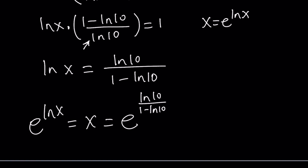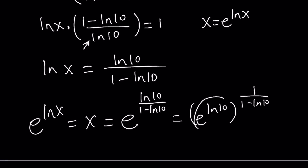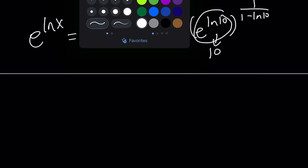There are different ways to write it. For example, this can be written as e to the power ln 10, to the power 1 over 1 minus ln 10. Notice that e to the power ln 10 is equal to 10, so this becomes 10 to the power 1 over 1 minus ln 10. That's the x value. All right, let's take a look at the second method.